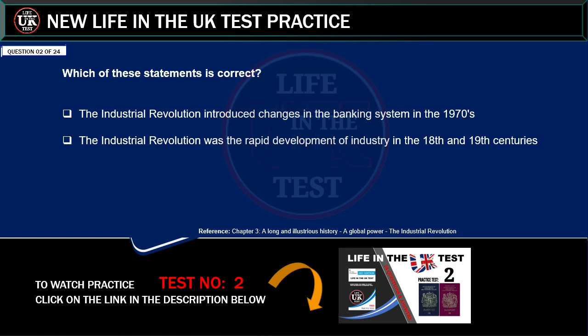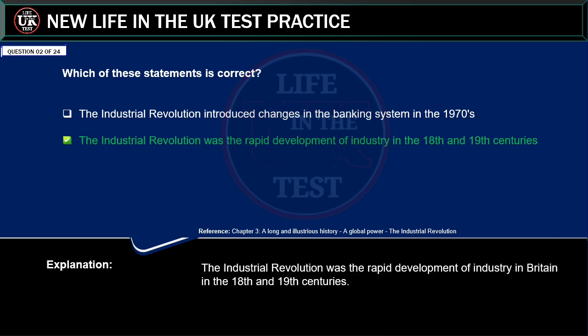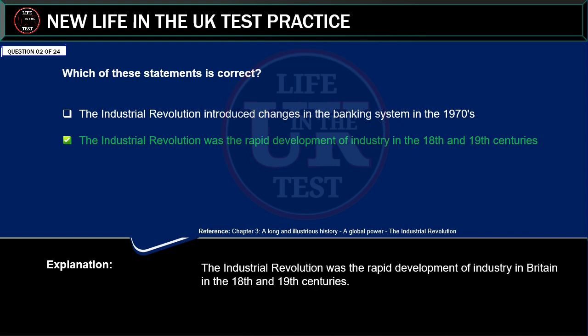Which of these statements is correct? The industrial revolution introduced changes in the banking system in the 1970s. Or: the industrial revolution was the rapid development of industry in the 18th and 19th centuries. Correct answer: the industrial revolution was the rapid development of industry in the 18th and 19th centuries.